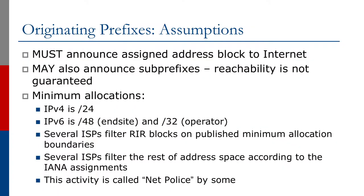When we originate prefixes, we make a few assumptions. The first assumption is that we announce our address block to the internet. The regional registries and many internet service providers and long-term internet experts always recommend that we announce our assigned address block to the internet on every single external peering. There are some operators today who do not do this, and this causes a lot of challenges with proper traffic engineering and providing good redundancy. So all these examples will always announce the address block out every external link.